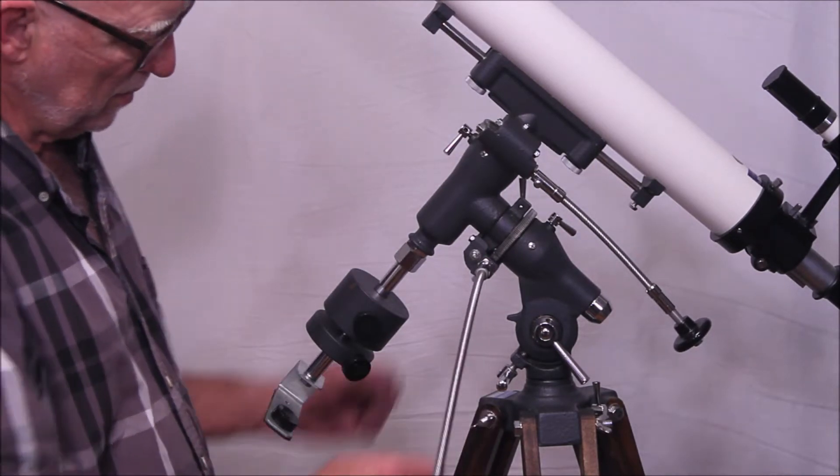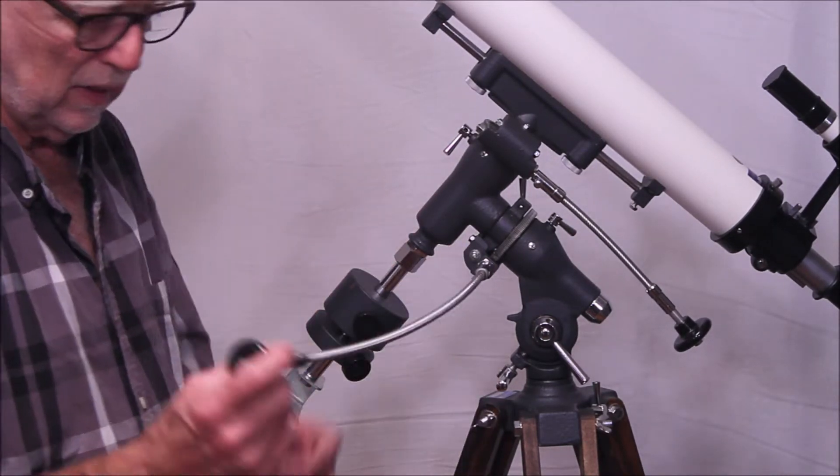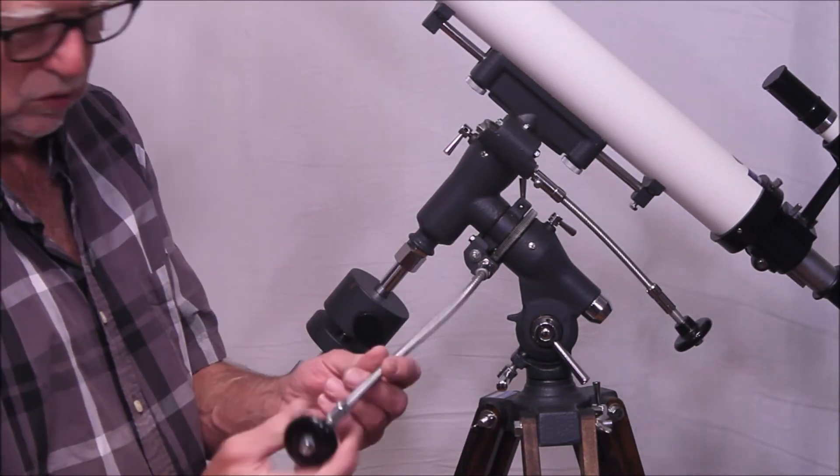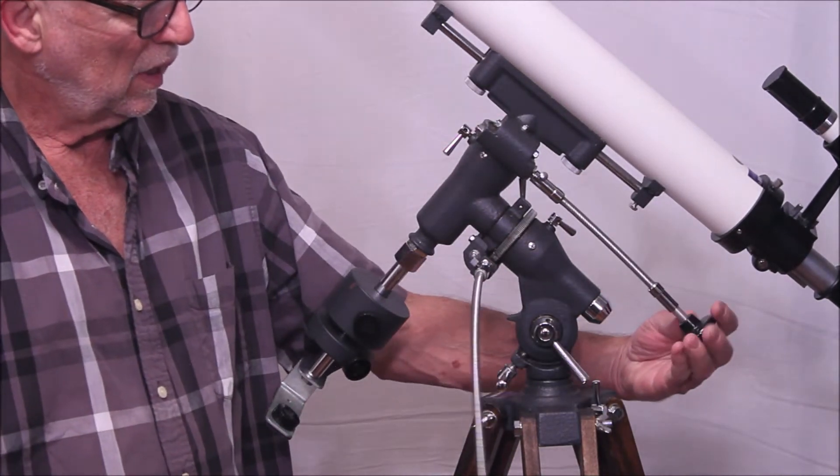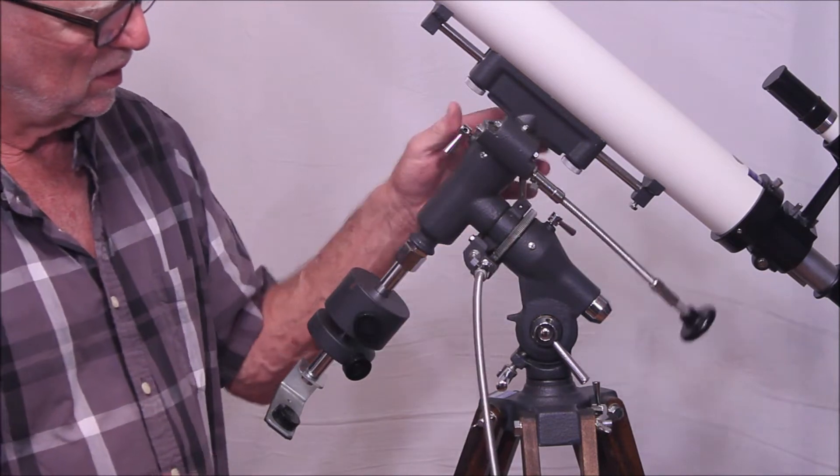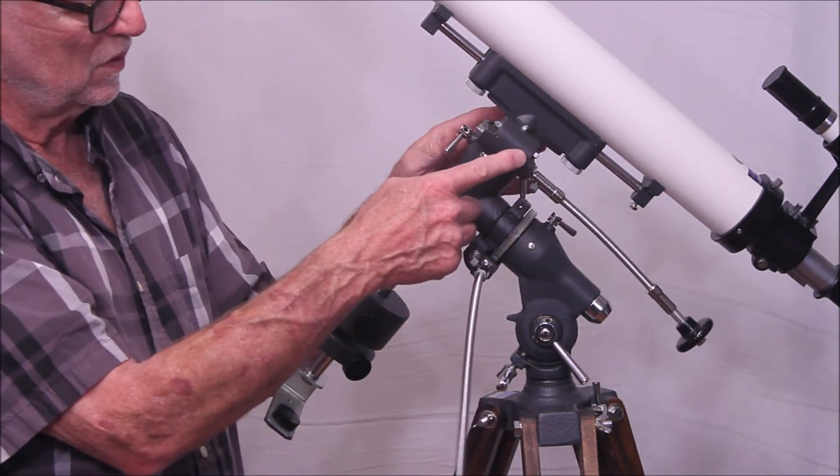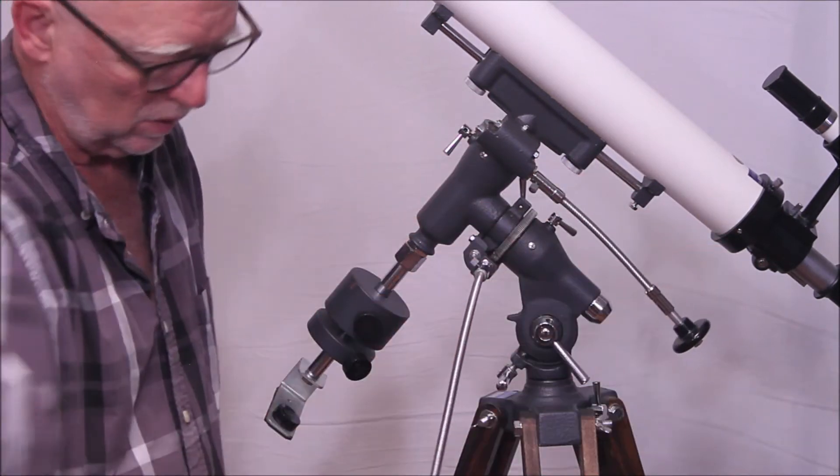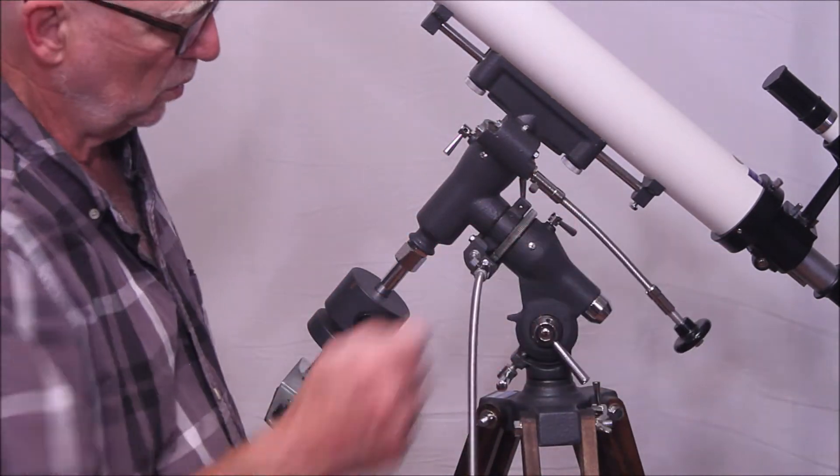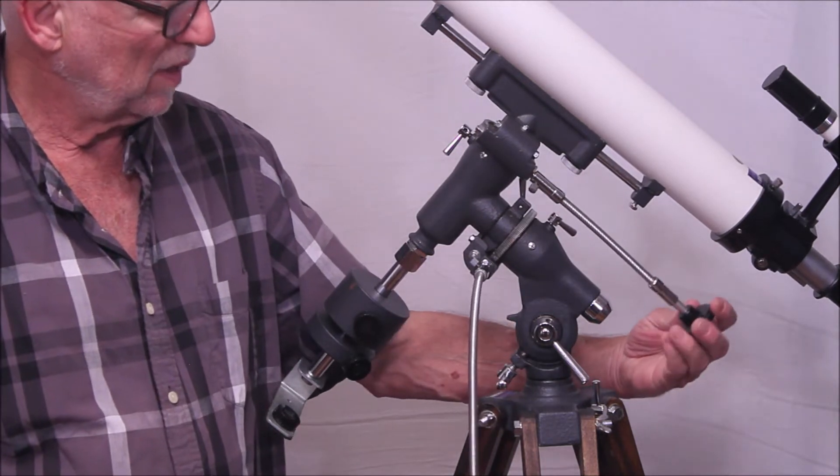Let's have a closer look at some of the features of this mount. It's got a kind of a typical GOTO handle on the slow motion. The slow motion on this device is on an unusual side. It would usually be mounted on what I would call the right hand side. If you were observing from the rear you'd hold it with your right hand. This is mounted on the left hand side.